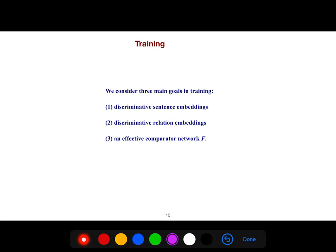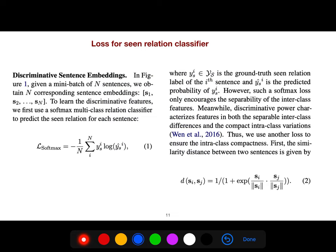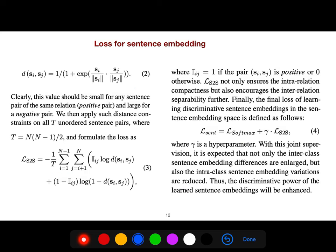So they consider three main goals in training: discriminative sentence embeddings, discriminative relation embeddings, and effective comparator approach. So loss for seen relation classifier is standard. Everybody knows how to deal with seen relations. We just use a simple multi-class relation classifier. And you know the similarity distance between two sentences can be used. We can use this formula for similarity. So clearly this value should be small for any sentence pair of the same relation. We call them positive pair and large for negative pair. We then apply such distance constraints on all T unordered sentence pairs.